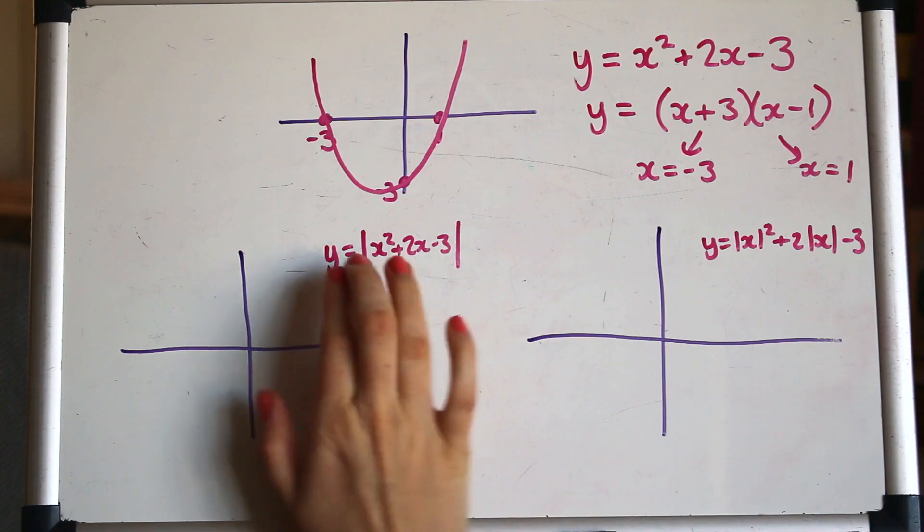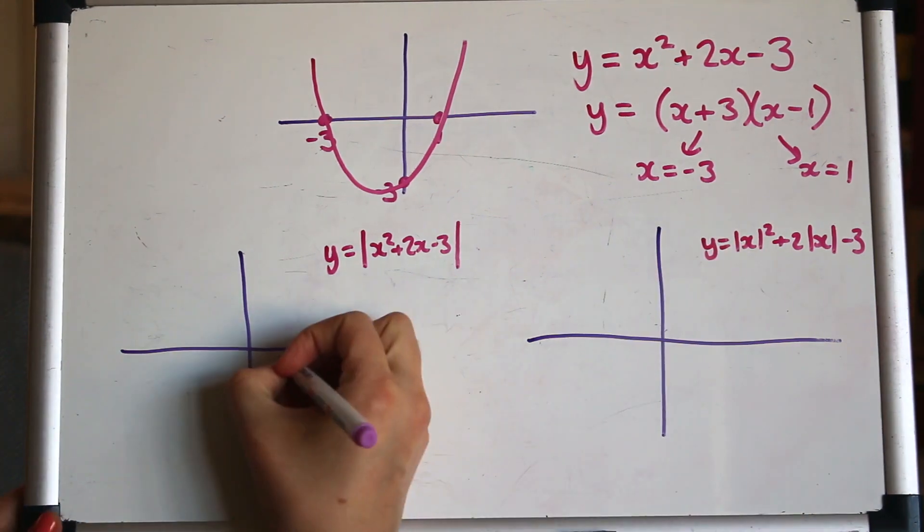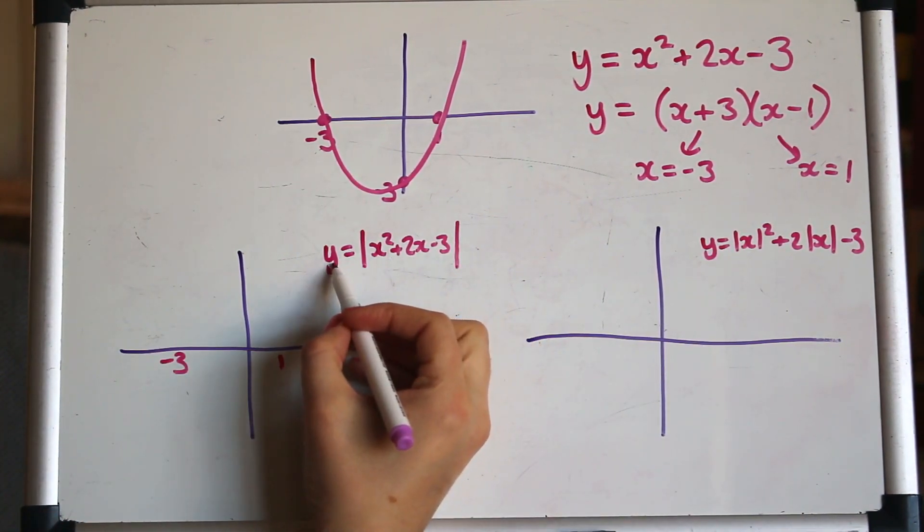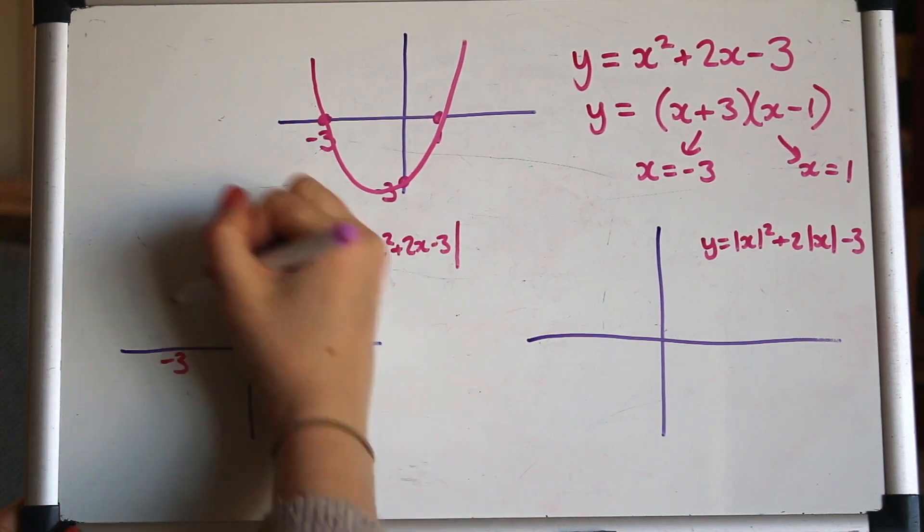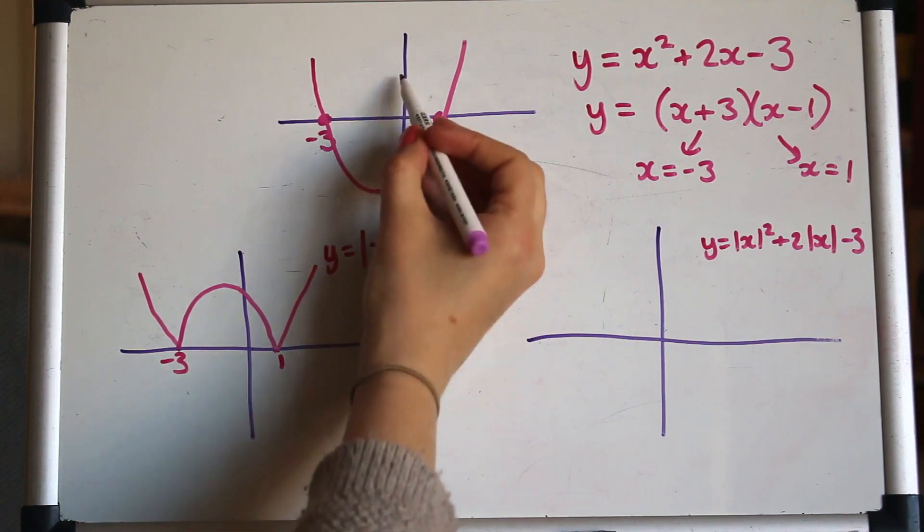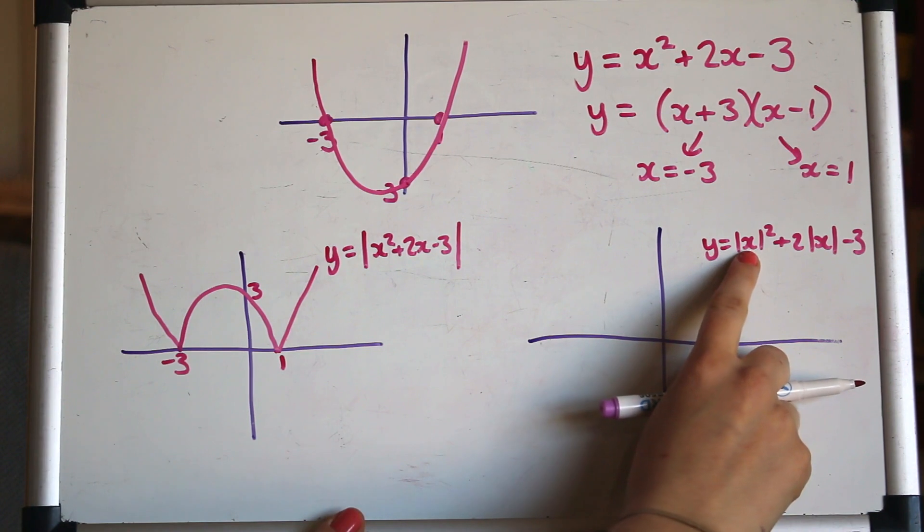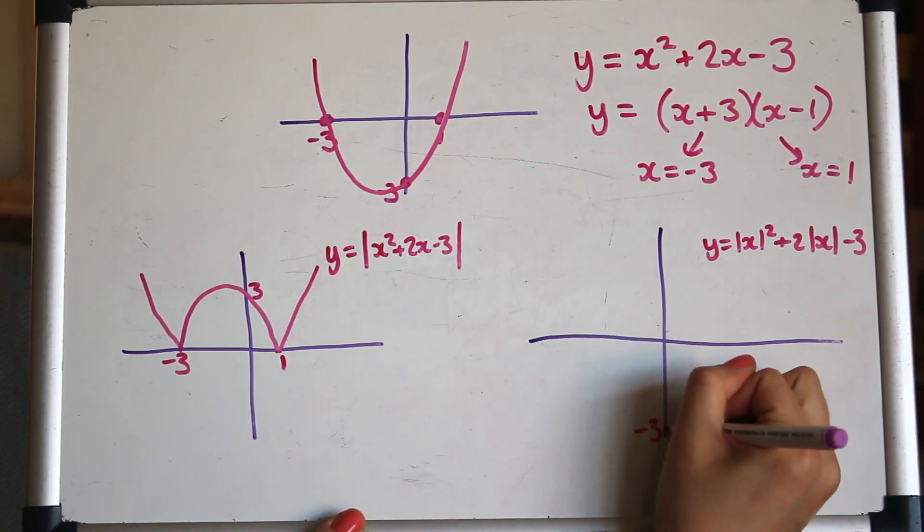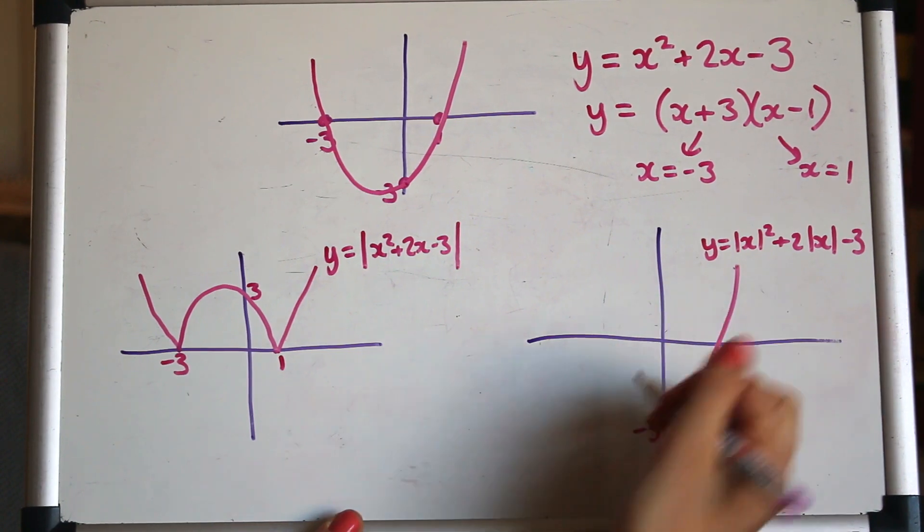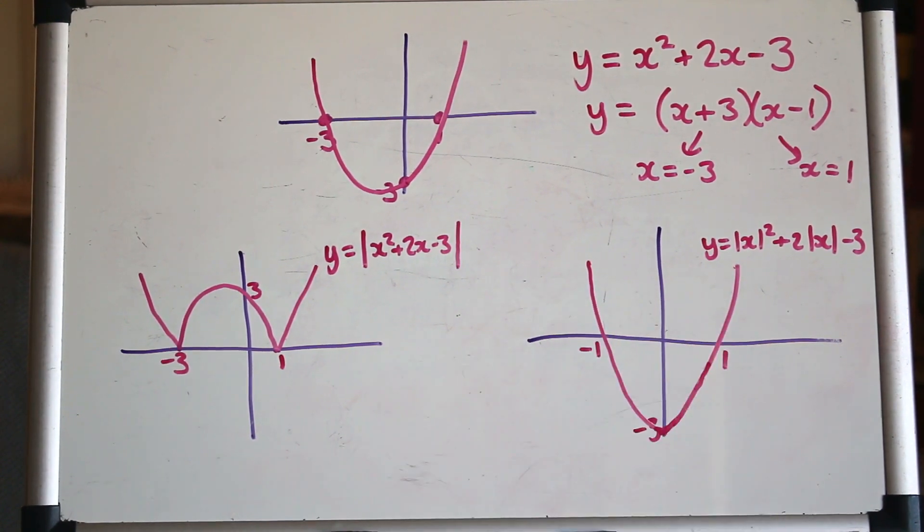And now we're going to try drawing the modulus graphs. So here I've modulised the whole function, and here I'm modulising just the x. So modulising the whole function, all the y values, the negatives will get bounced up. And it's going to cut the y-axis at the same point, so that minus 3 will become 3. And for this graph, the x values are getting modulised. So all the positive x values will look the same, and the negative x values will be the same repeated on that side. Well done if you're getting those. It does take a little bit of practice to get the difference between those, so do have a go at a few of them.